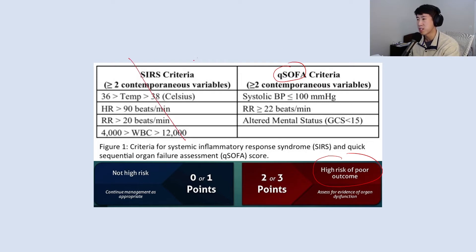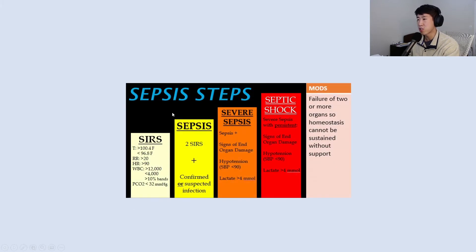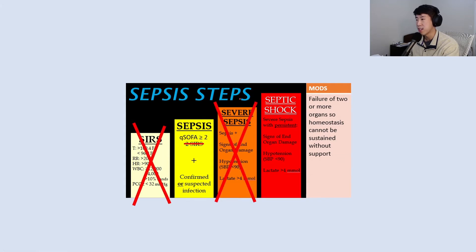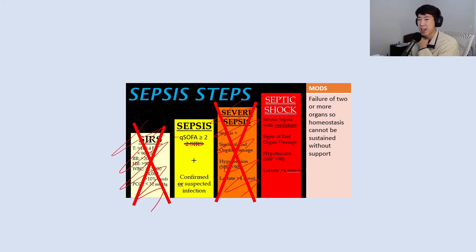The qSOFA was intended as the replacement for the SIRS criteria. In Sepsis 3, they also removed the SIRS criteria and the definition of severe sepsis. Sepsis is now defined by a qSOFA score of 2 or more plus confirmed or suspected infection. We should no longer use SIRS or severe sepsis as terminology, though you'll notice people still use these terms because they've been so ingrained. There has been some controversy around accepting the new Sepsis 3 definitions.